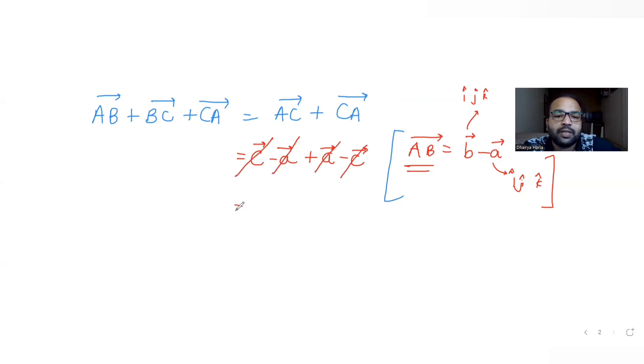So the value of the vector which is asked to us, that is AB bar plus BC bar plus CA bar, that comes out to determine zero in this case. So the answer for the question asked to us here in this question is zero, and this matches with our option that is B.